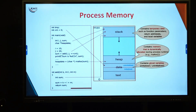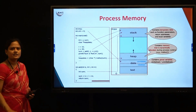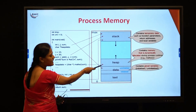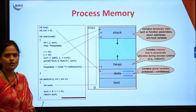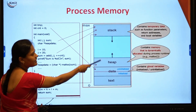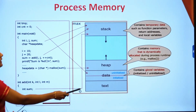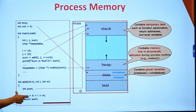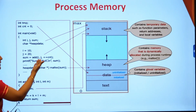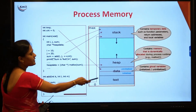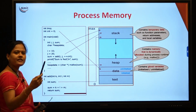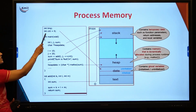You have written a program, given it to a CPU for execution, and it has been converted into a process. The process memory is divided into four parts, also called attributes: text, data, heap, and stack. The text attribute contains whatever code you have written — when compiled by the system, you get object code, and that code is stored in the text attribute. The data attribute contains all the variables — global variables which are initialized or uninitialized.